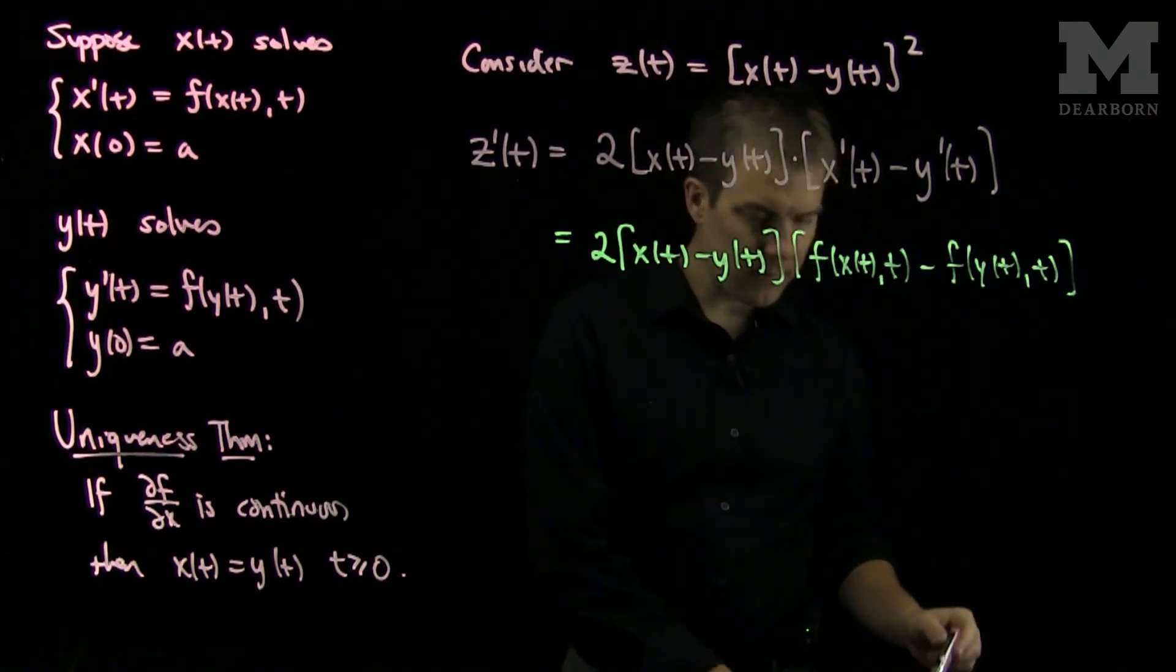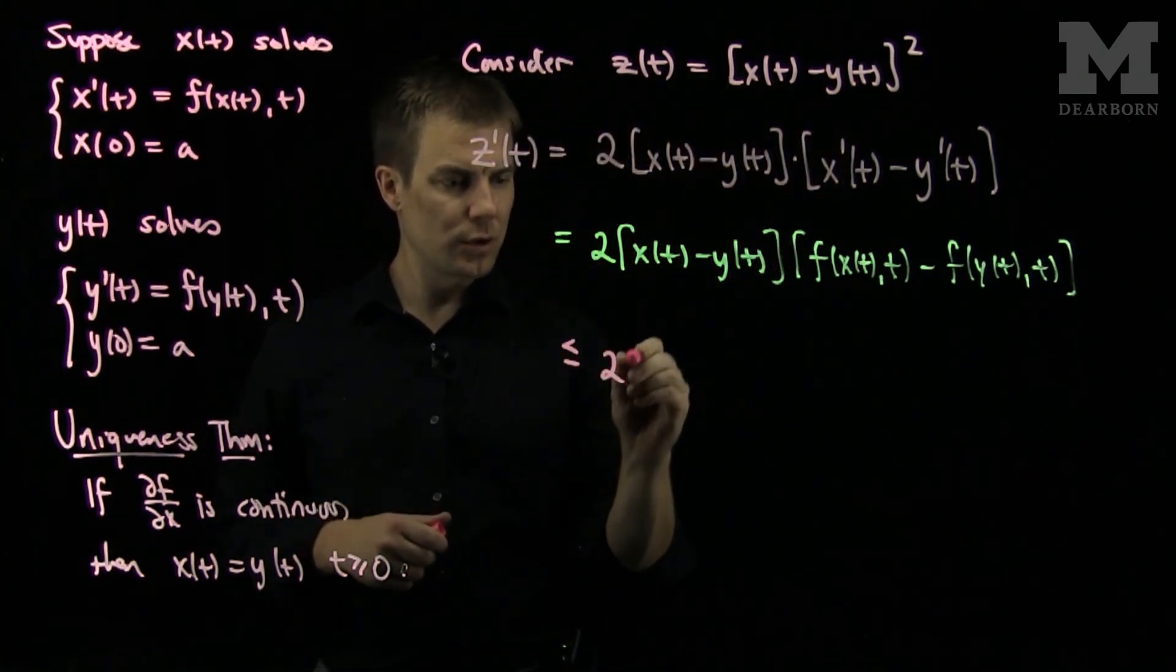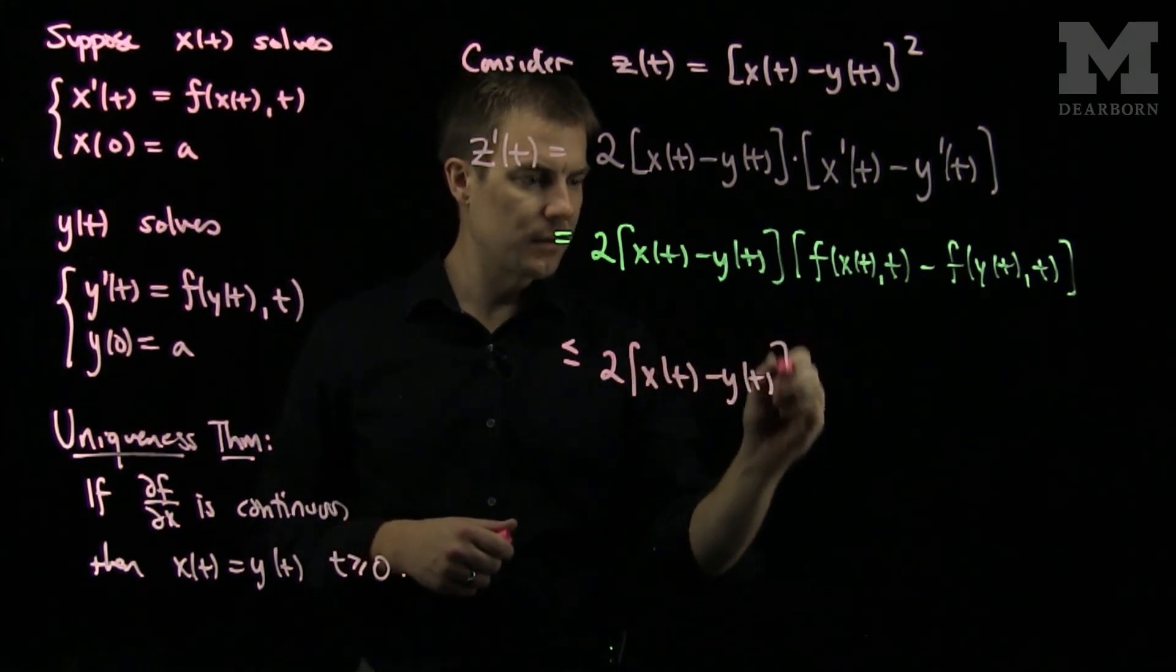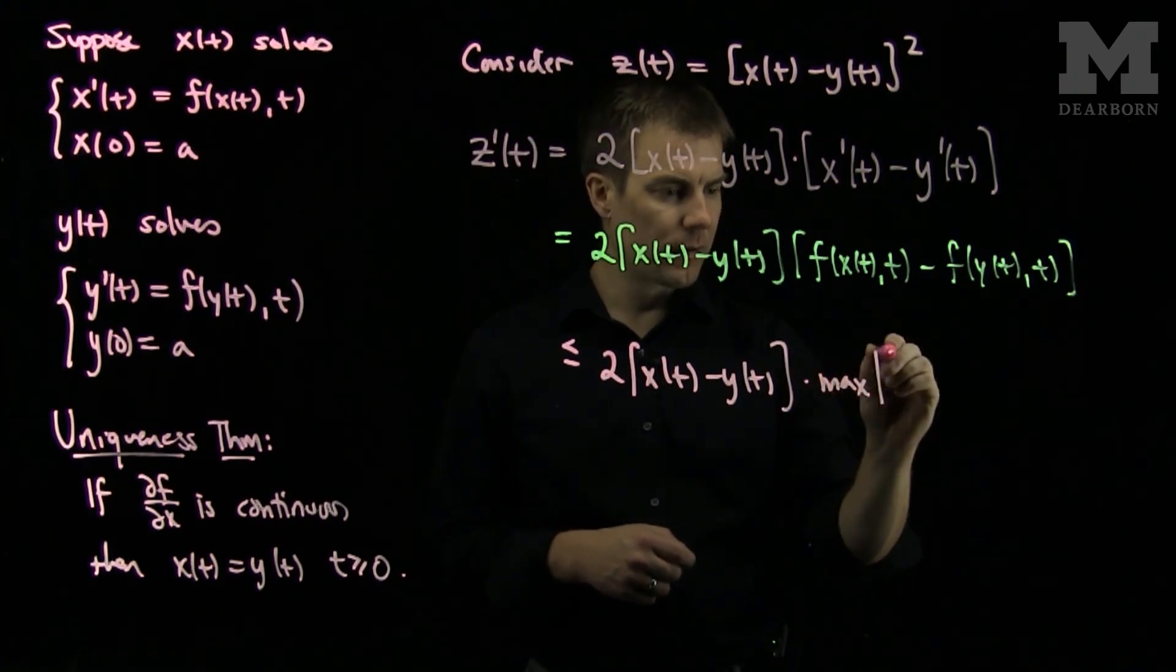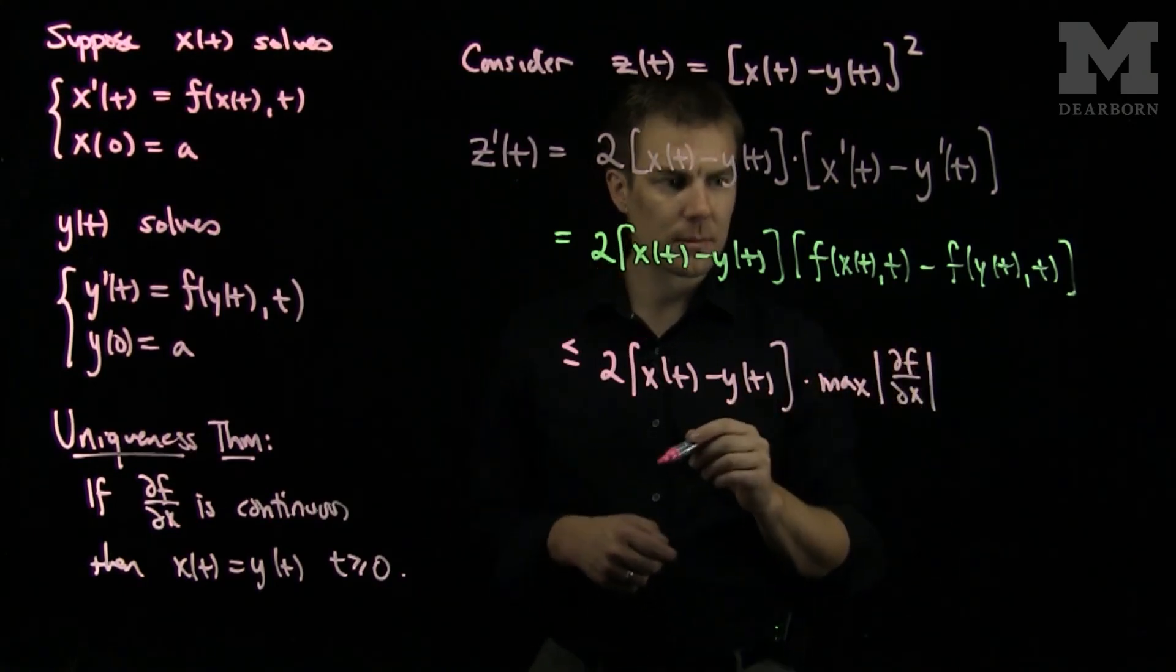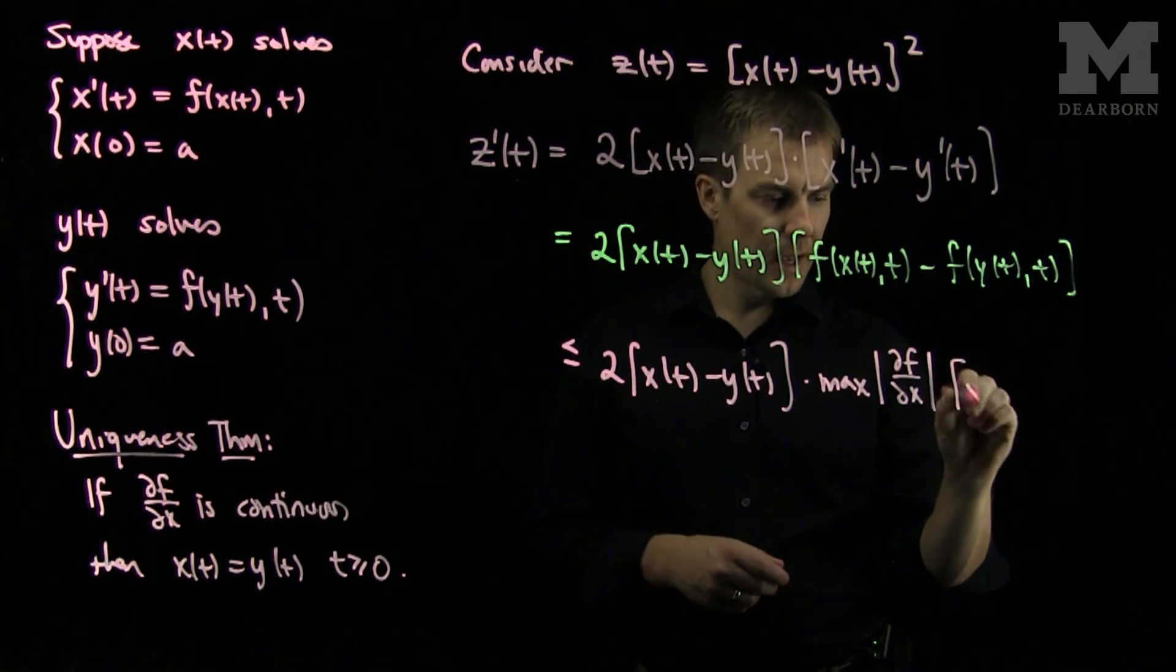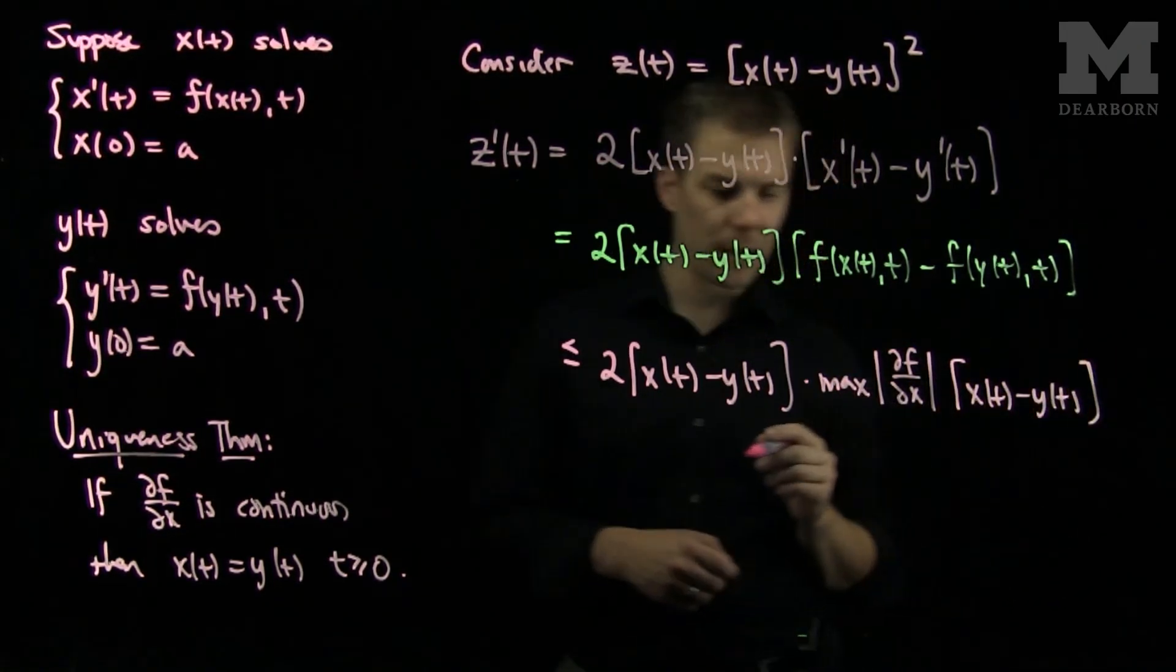Now, we can use the mean value theorem to say that this is less than or equal to 2x of t minus y of t times the maximum of partial f partial x over the region where this is defined times x of t minus y of t by our mean value theorem.